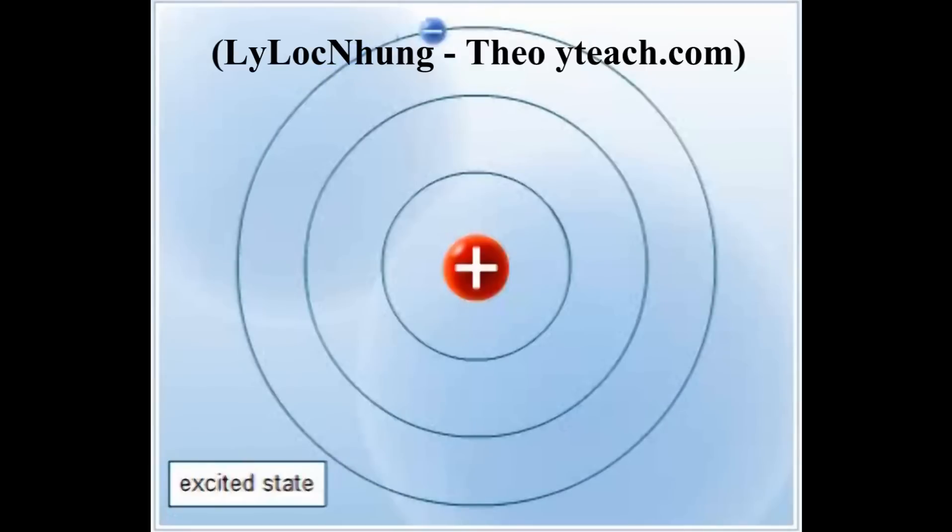In the excited atom, electrons can drop back into the lower orbits. Then the excess energy is released as photons of light. The energy of a photon is equal to the energy difference between the orbits involved.